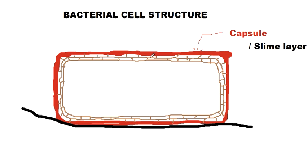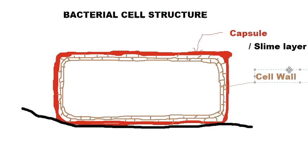Inside the capsule you can see another layer called the cell wall of the bacteria. This is not like the cell walls you commonly hear of in plant cells — this cell wall is made up of a special substance known as peptidoglycan. The cell wall is present inside the capsule or the slime layer.